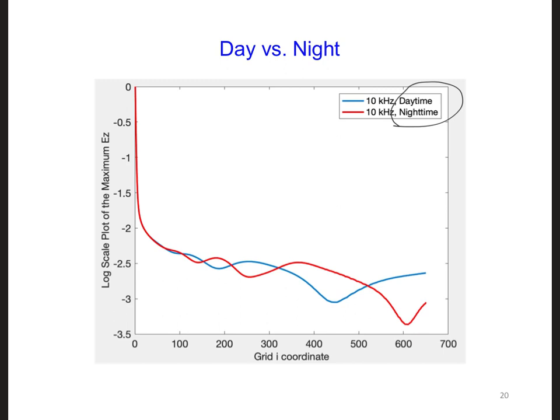Also, we can see that the location of a null is impacted by the ionospheric conditions. Not just the frequency of the transmitter will impact where the nulls are, as we saw earlier.